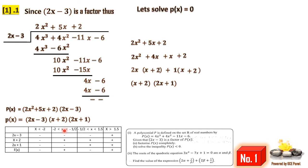For the interval between negative 2 and negative one-half, we test x equals negative 1: 2(−1) − 3 = −5 (negative); −1 + 2 = 1 (positive); 2(−1) + 1 = −1 (negative). Product: negative times positive times negative is positive, so p(x) is positive here. For negative one-half to 1.5, we test x equals 0: 0 − 3 (negative), 0 + 2 (positive), 0 + 1 (positive). Product is negative. For x greater than 1.5, everything is positive.